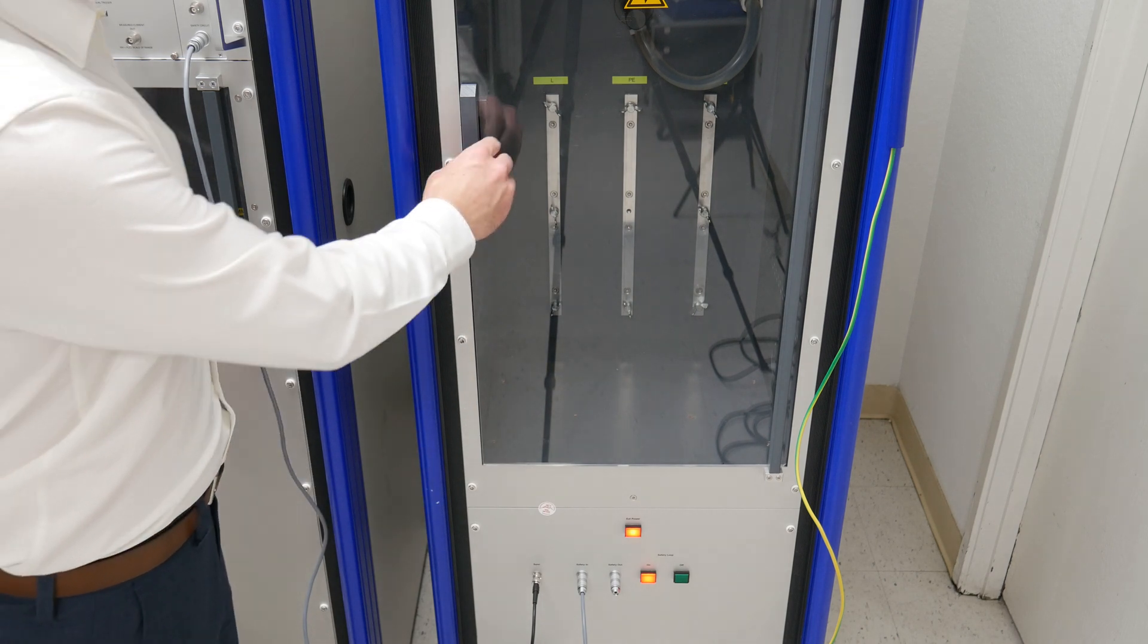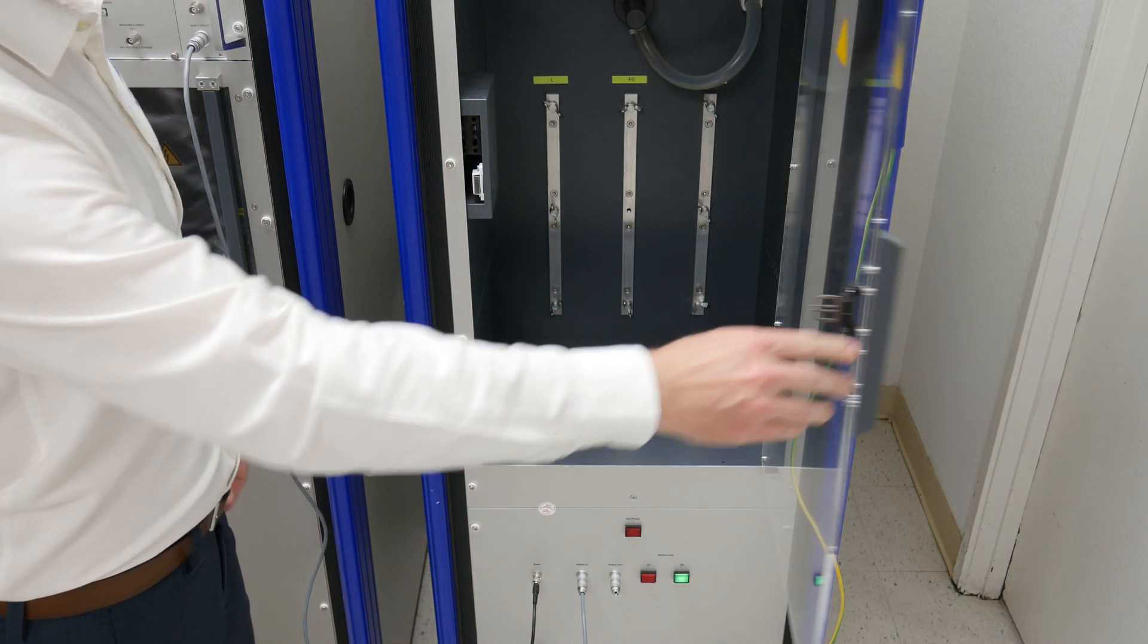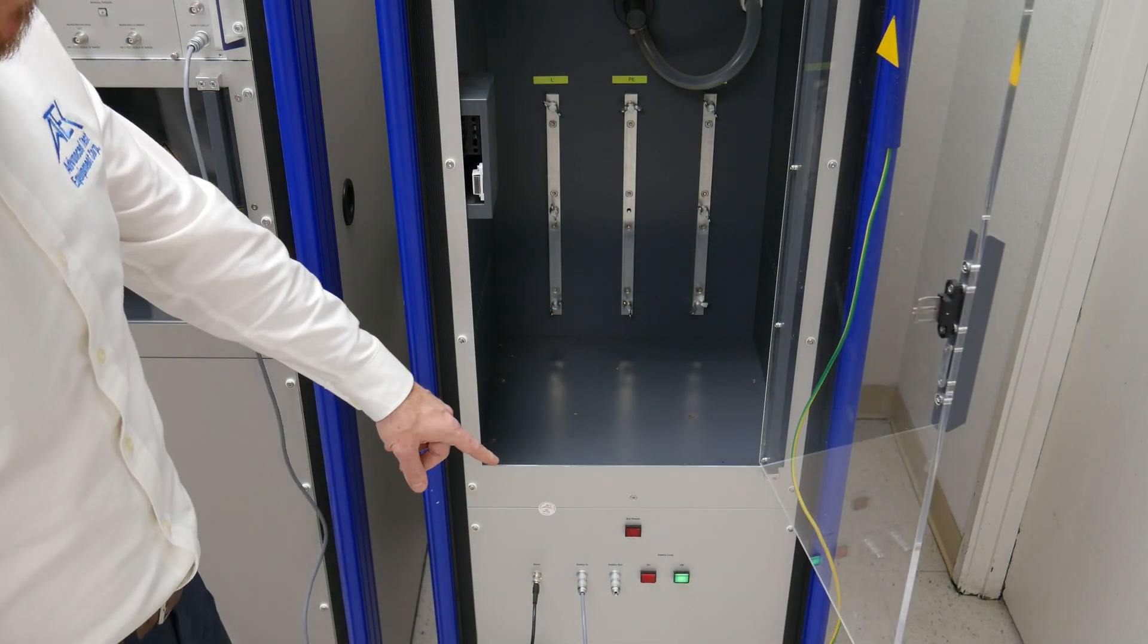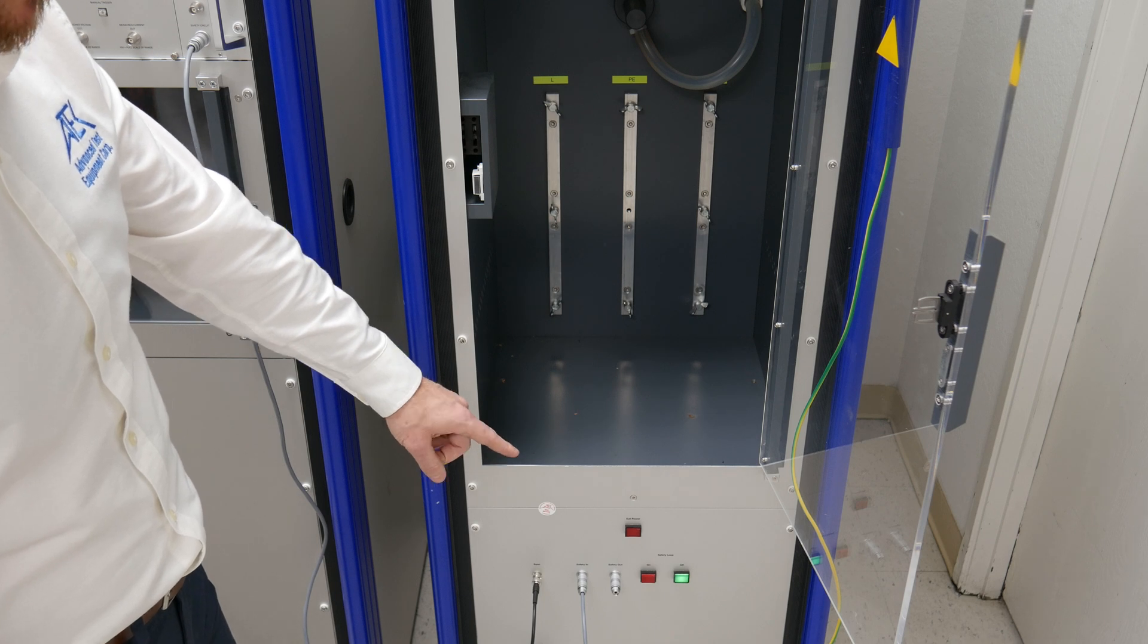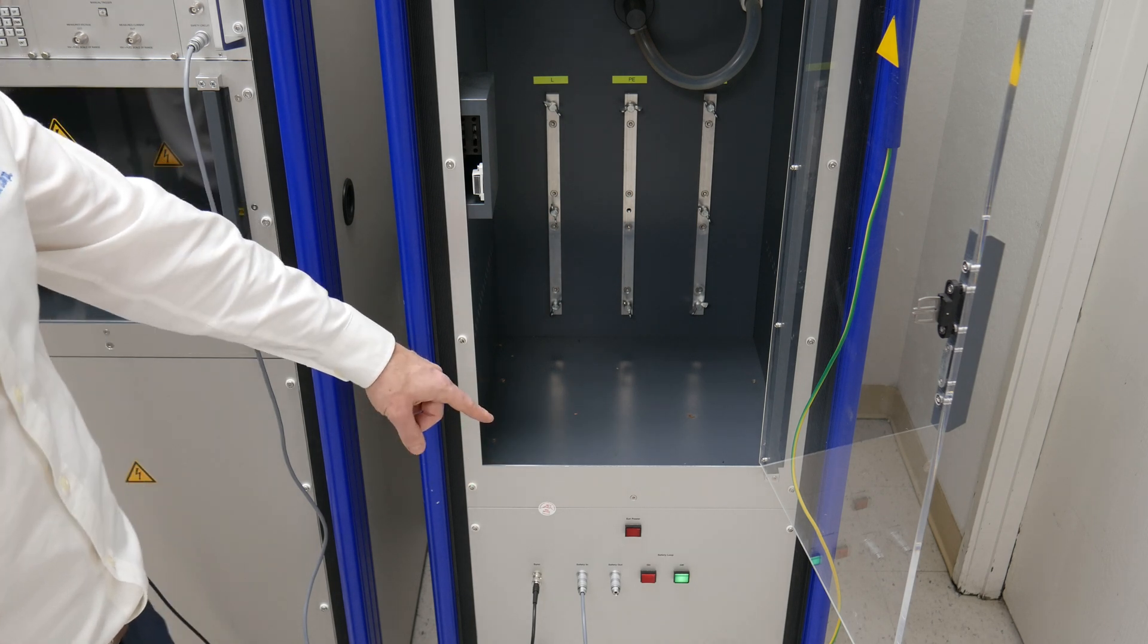And here we have a safety feature in which we open the enclosure. We can see that the safety loop turns off in which the EUT power also turned off.